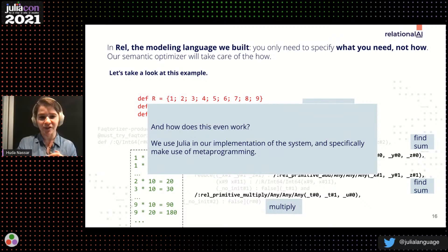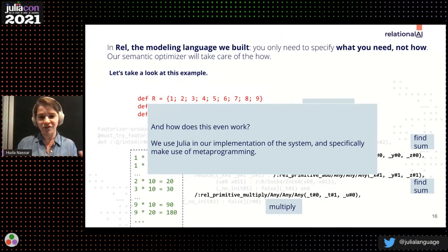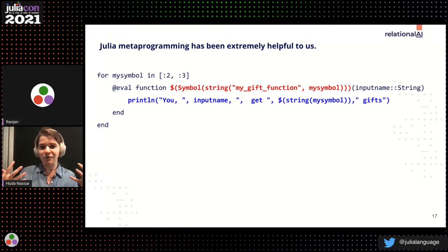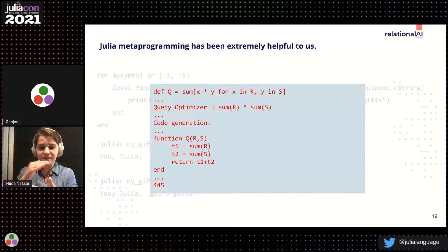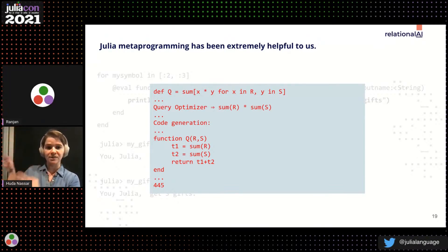How does this connect to Julia? The semantic optimizer determines the smart algorithm for your query, but then how does that code actually run? We make use of one amazing Julia feature: metaprogramming. Metaprogramming is the idea that you generate or rewrite code that will generate code. For example, looping over symbols 2 and 3 generates two functions — my_gift_function_2 and my_gift_function_3. That is exactly one process in our pipeline: we generate Julia code, and then Julia takes care of the rest.